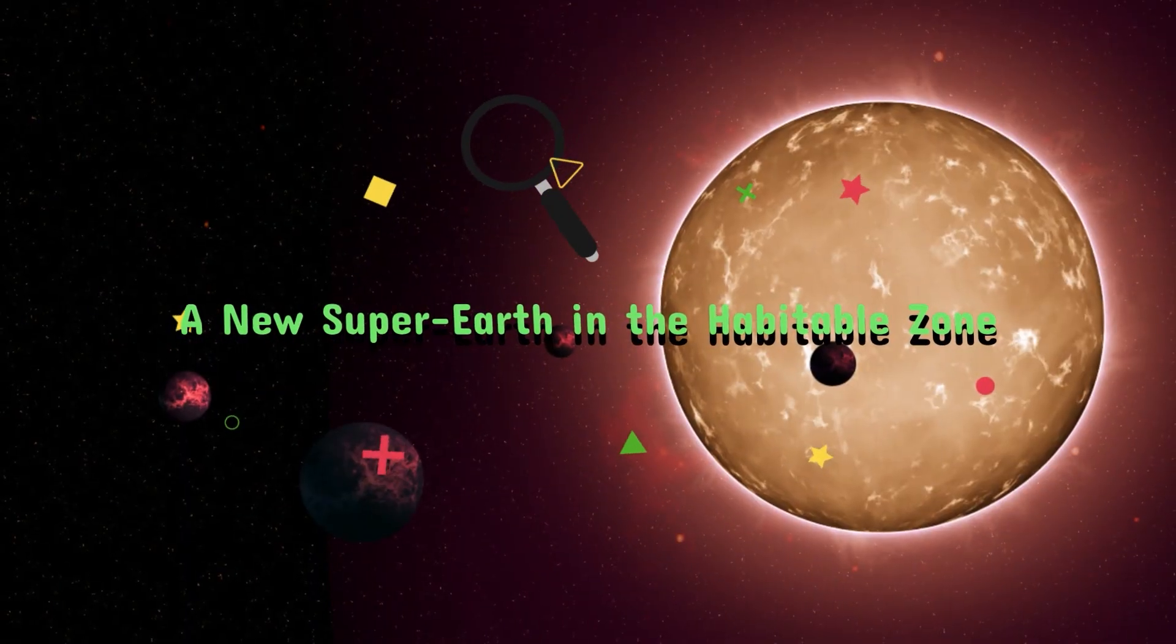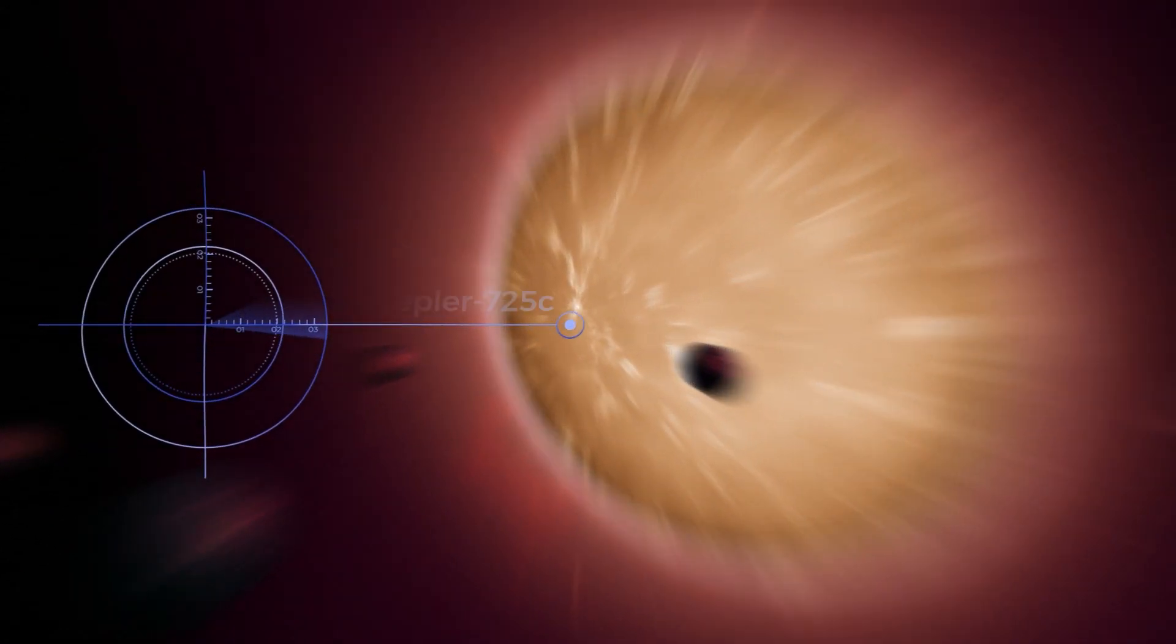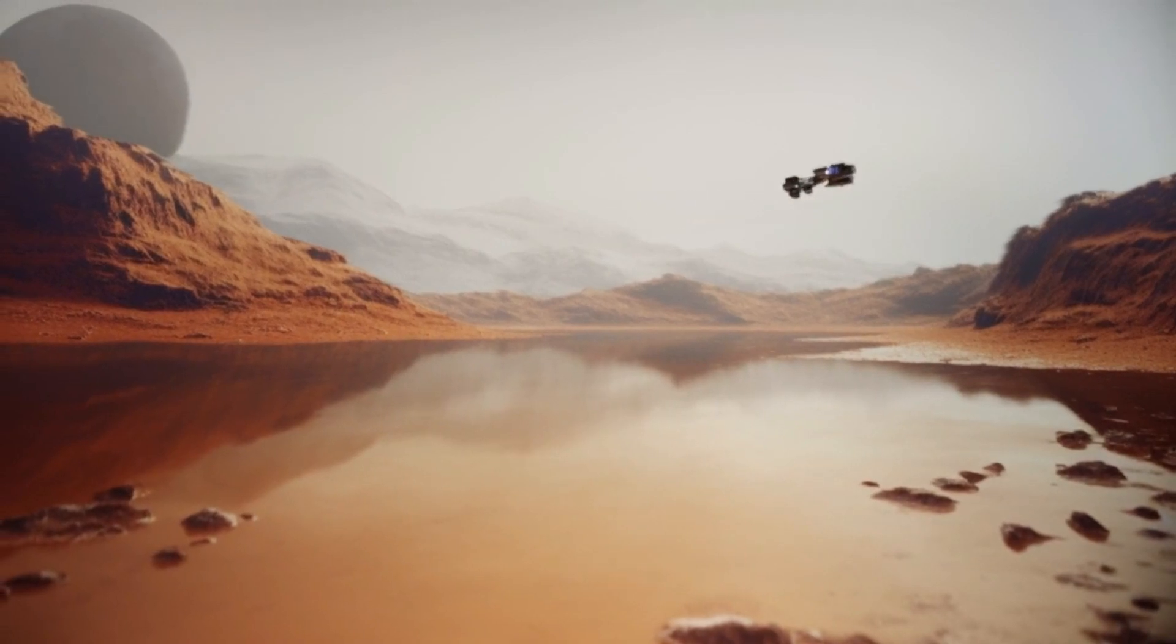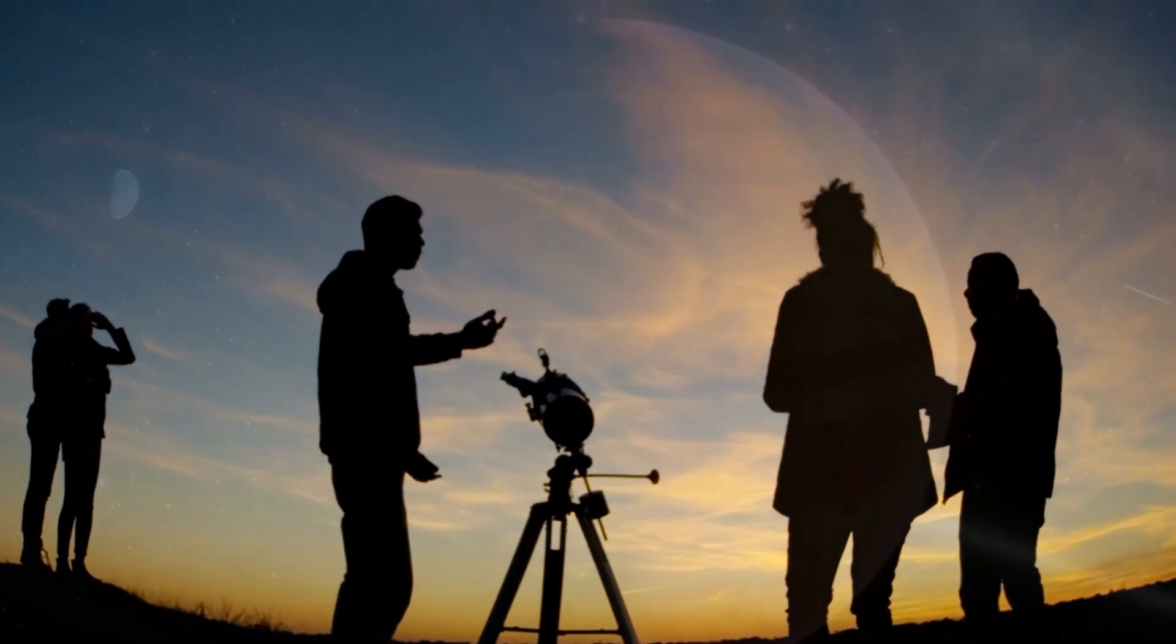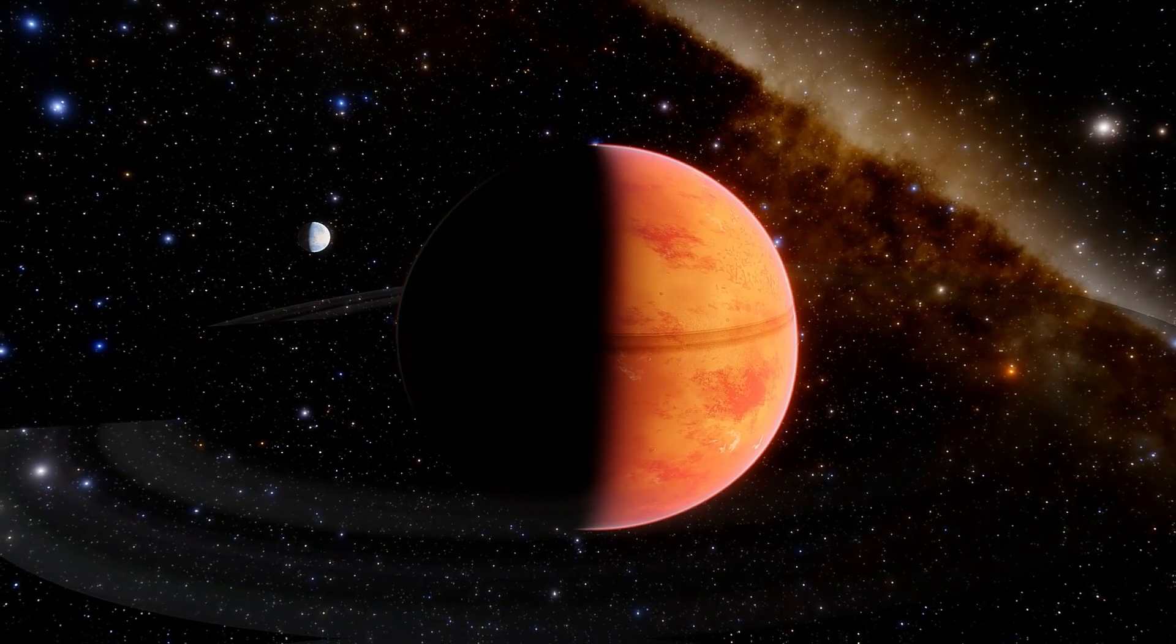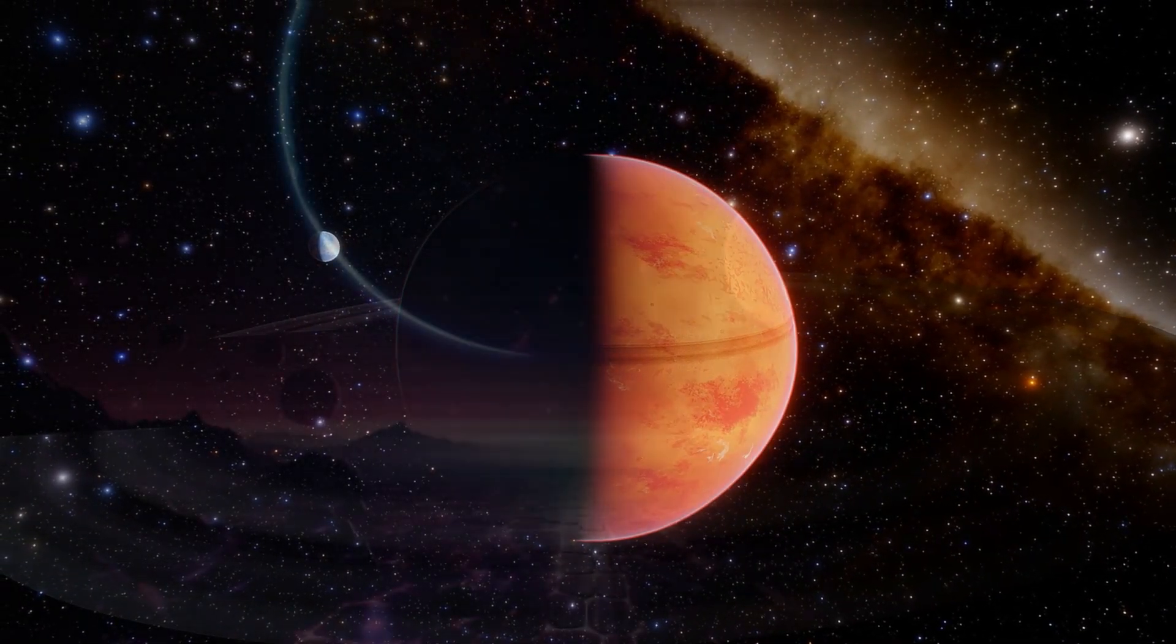A new super-Earth in the habitable zone, Kepler-725c. On June 3, 2025, astronomers announced the discovery of Kepler-725c, a super-Earth orbiting a sun-like star in the constellation Cygnus.